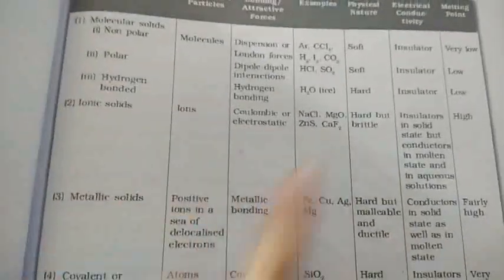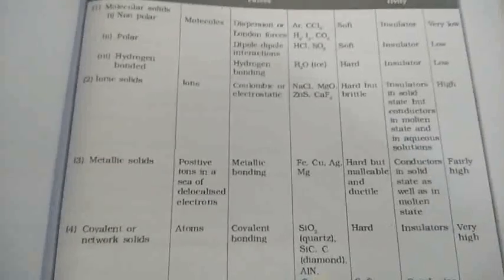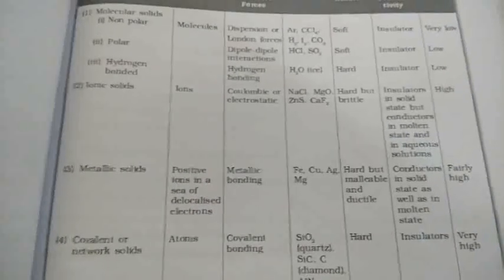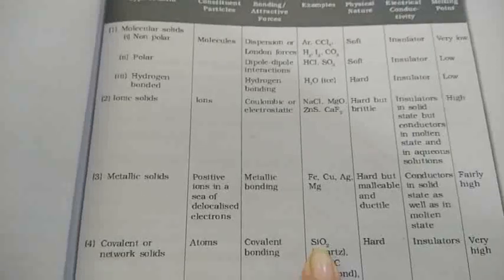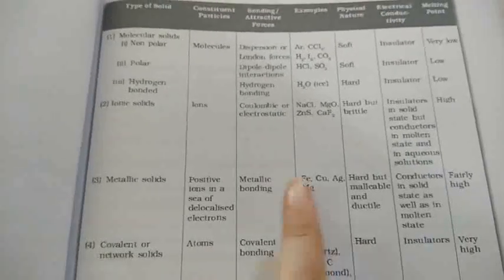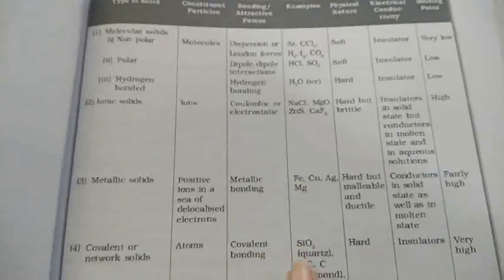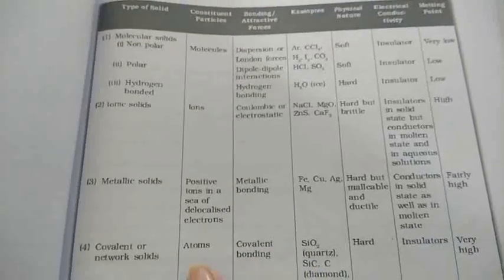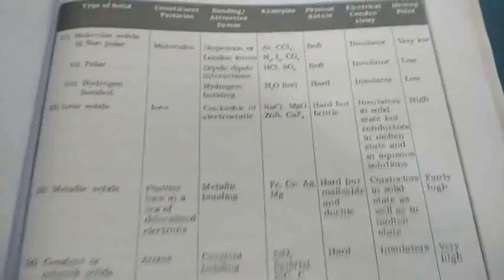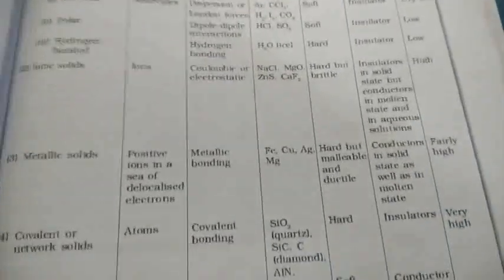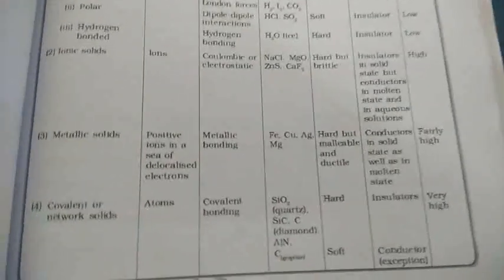This table from NCERT has to be properly learned — especially the examples of ionic solids, metallic solids, and covalent or network solids. Once in board exams, a question was asked: which type of solid is silicon carbide and Fe? The answer is silicon carbide is a covalent or network solid, and iron is a metallic solid. This kind of question can be asked from this table.